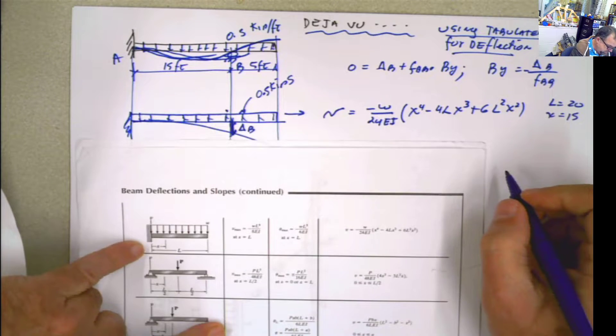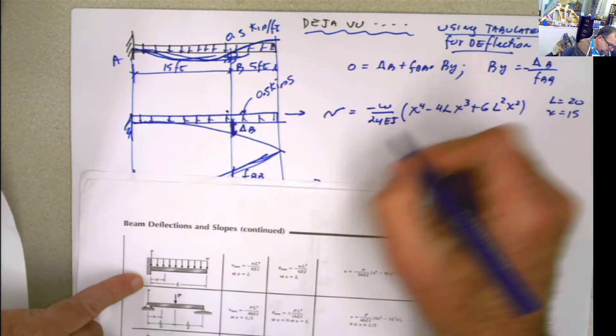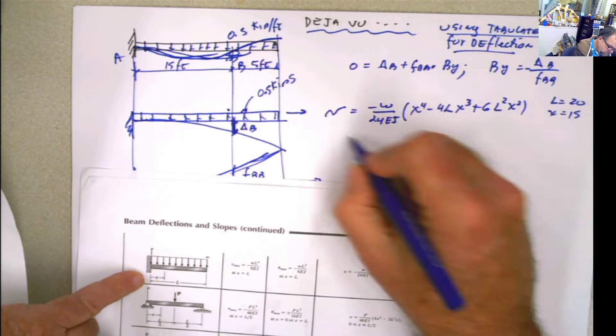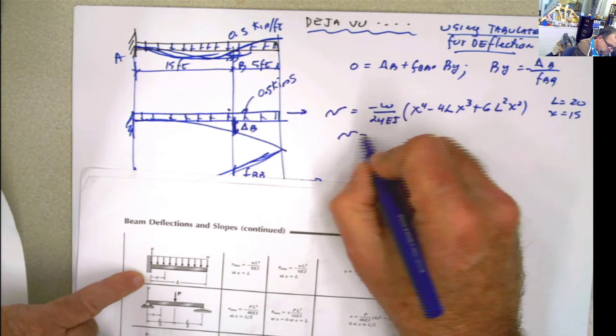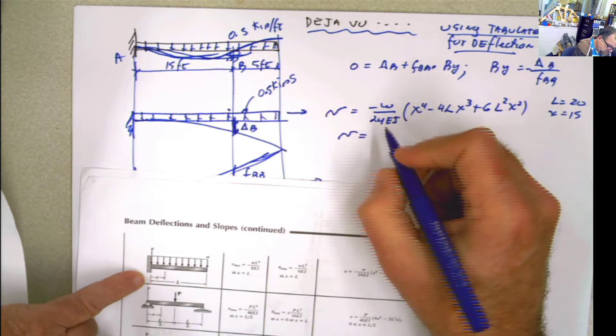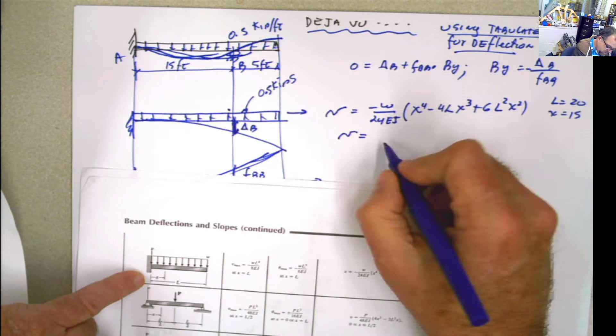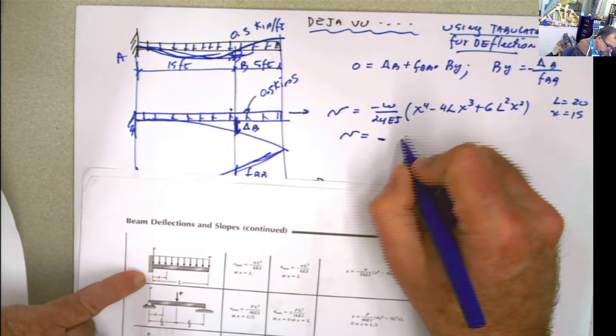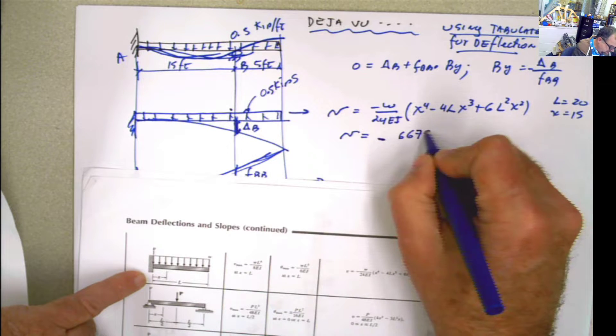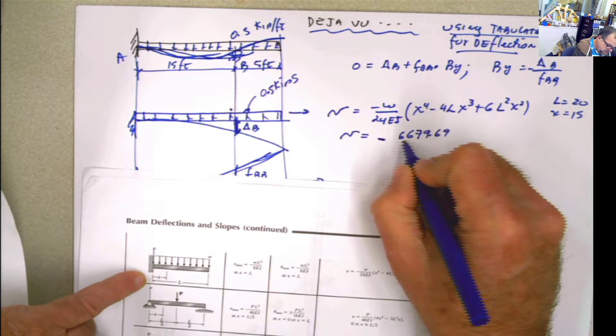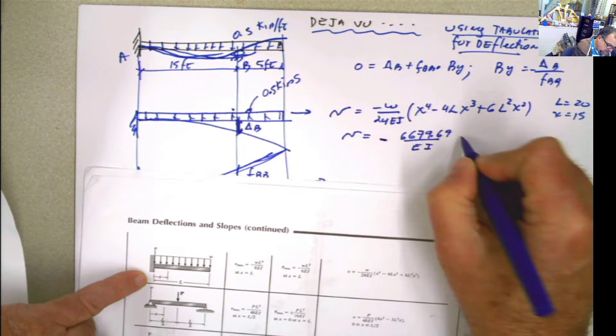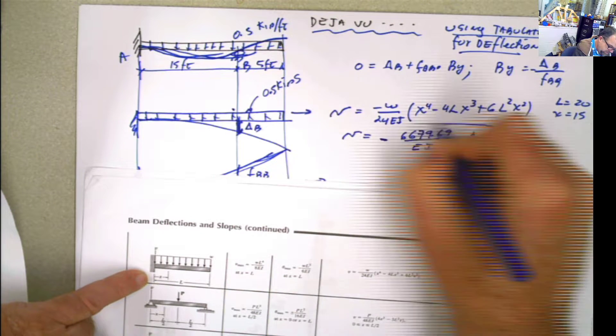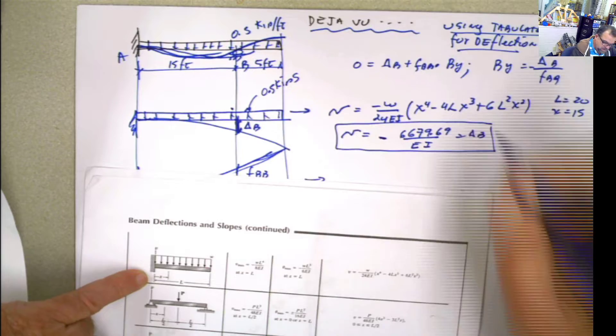That's basically it. So once you put this together, you're going to get your deformation, deflection for that part, is going to be equal to negative 6679.69 divided by e i. And this is what we call delta b. There you go.